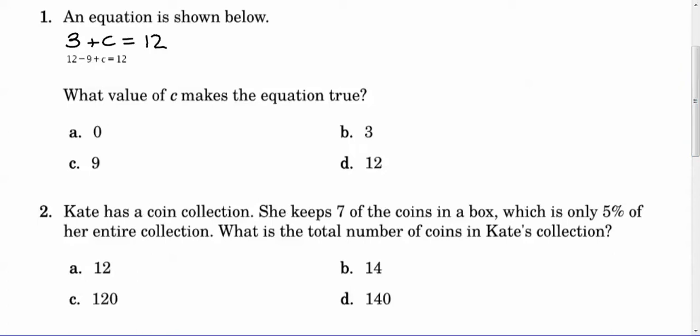This is really also a review on how to solve a one-step equation. We need to get the C isolated, so instead of adding the 3, we're going to subtract the 3. That would leave us just with C on this left side, and 12 minus 3 is 9. So we know C has to equal 9, choice C actually.